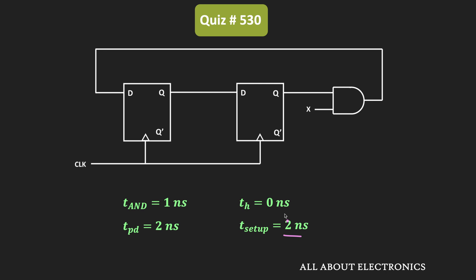The setup time of the flip-flop is the time duration for which the input to the flip-flop should remain stable before the arrival of the clock edge — here that is 2 nanoseconds. Similarly, the hold time is the time duration for which the input should remain stable after the passing of the clock edge — here that is 0 nanoseconds.